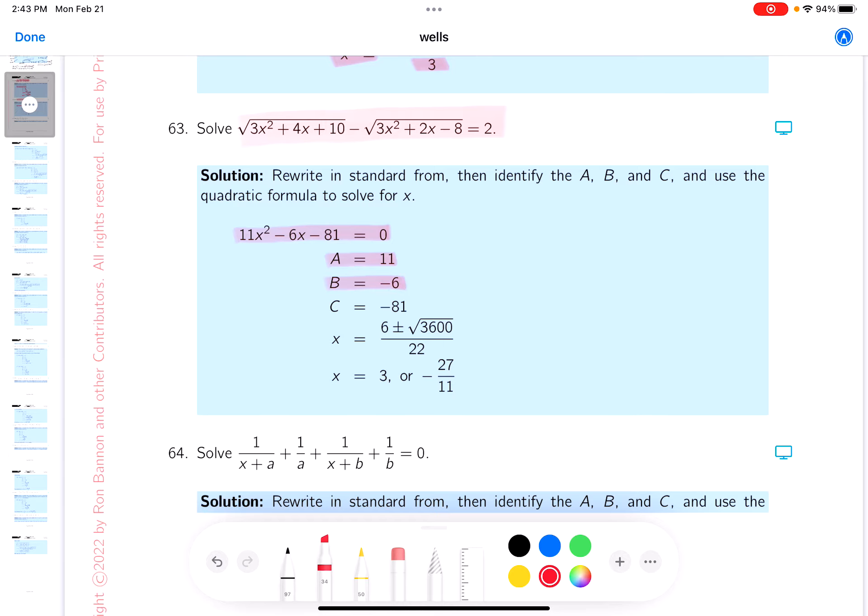B to minus 6, C to minus 81. Again, you're allowed to use a computer or calculator to do that, and you should be getting these things over here, which I'll be honest with you is a good indication that this thing is factorable. What I mean by that...